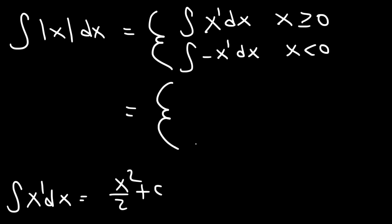Thus, we have 1 half x squared plus c when x is greater than or equal to 0, and the antiderivative of negative x is negative 1 half x squared plus c when x is less than 0.